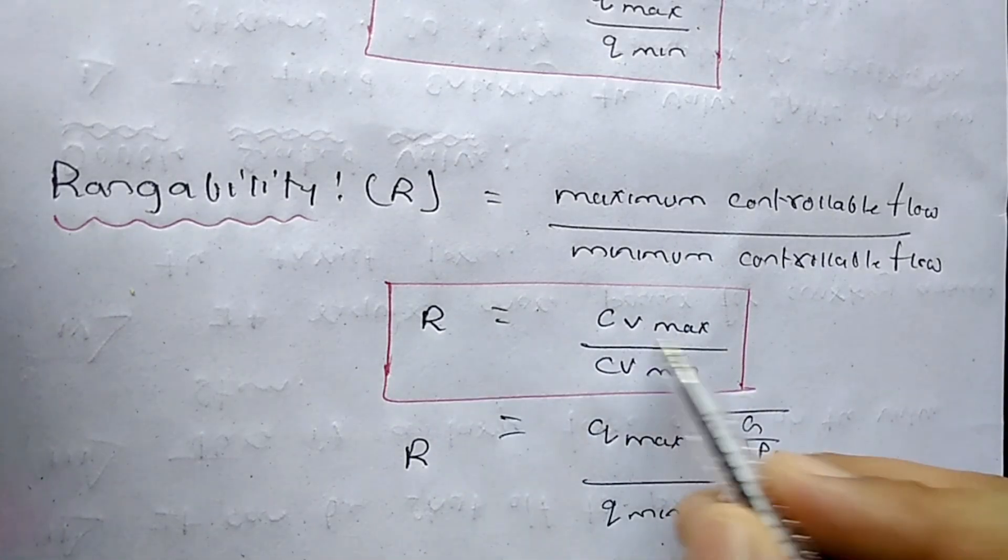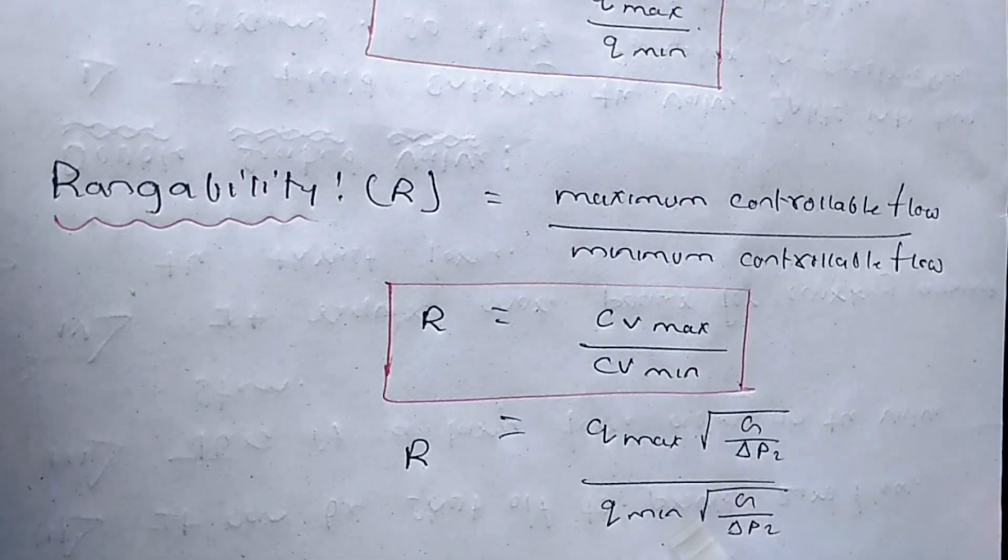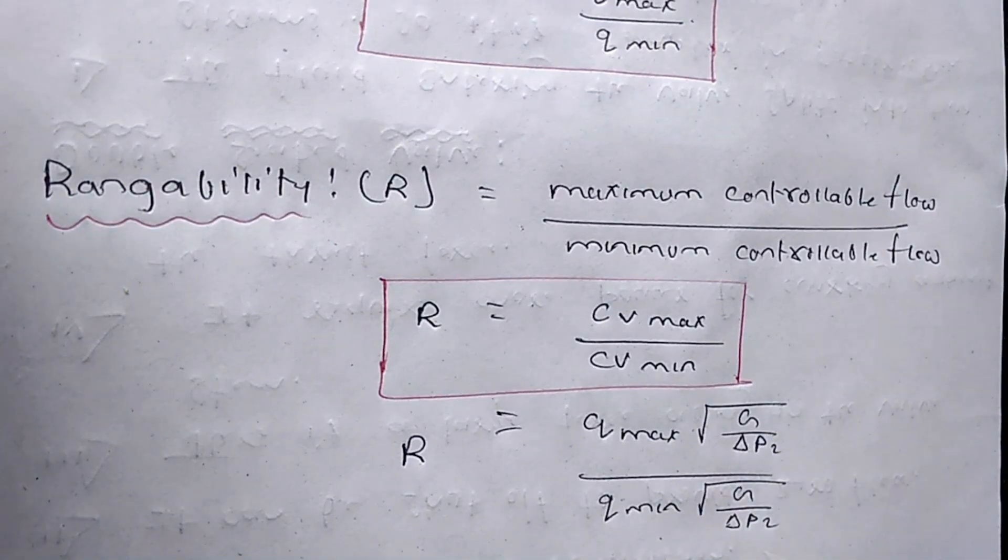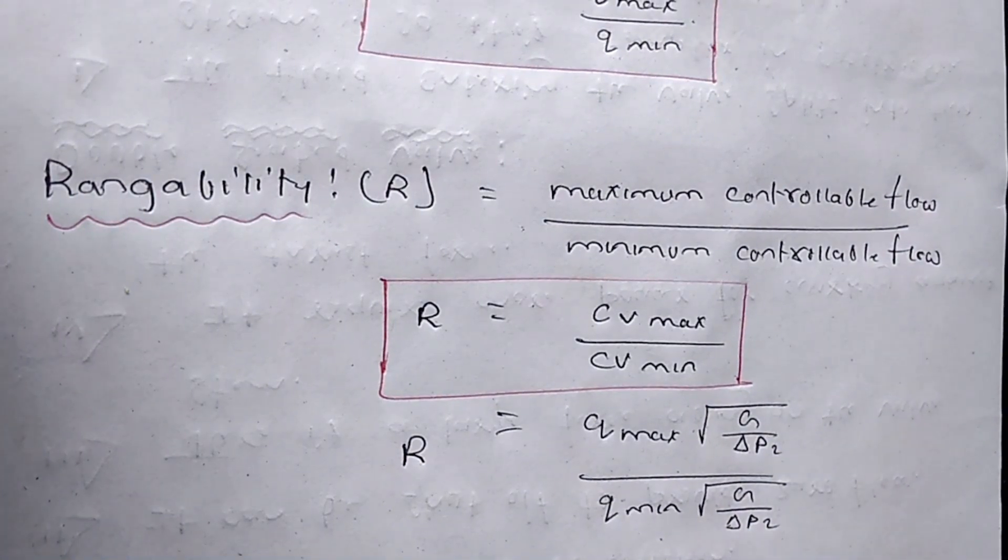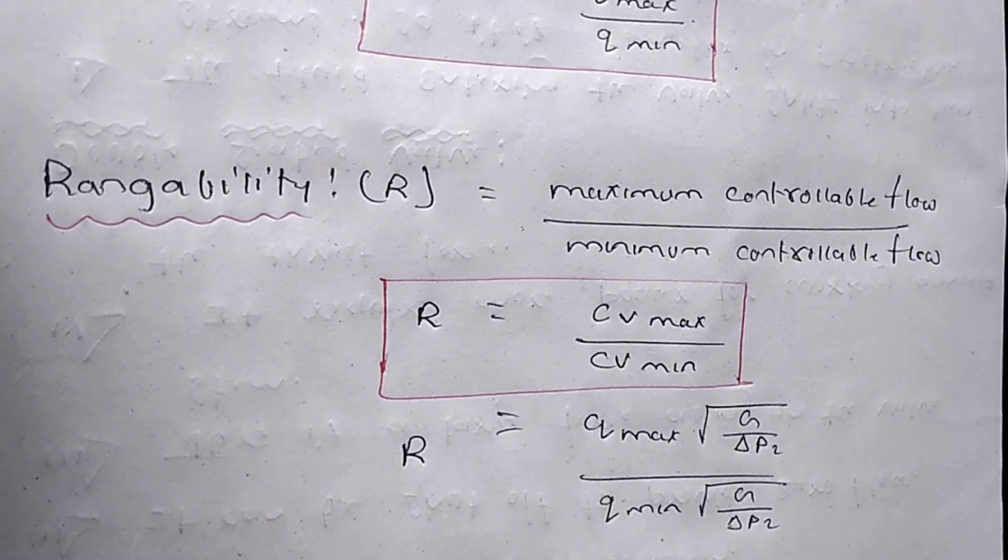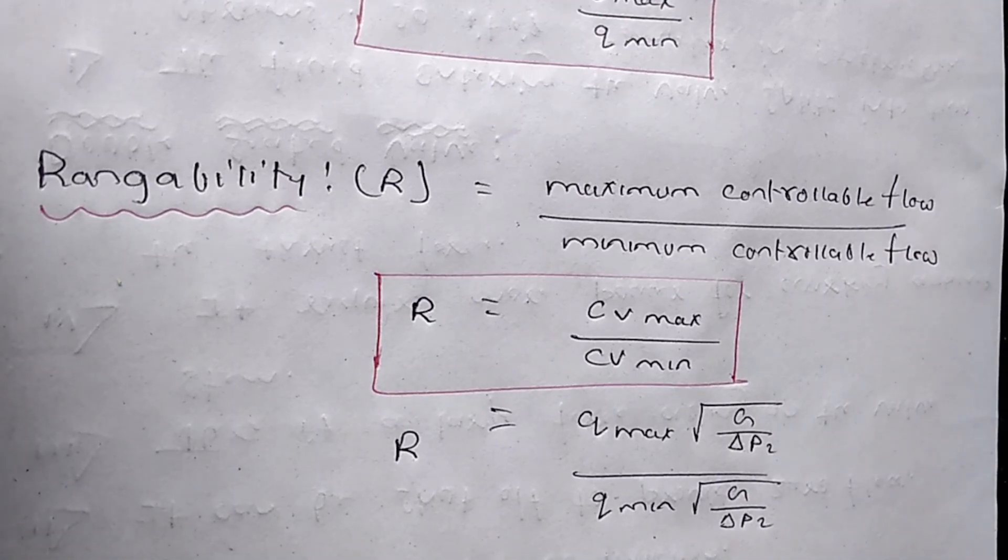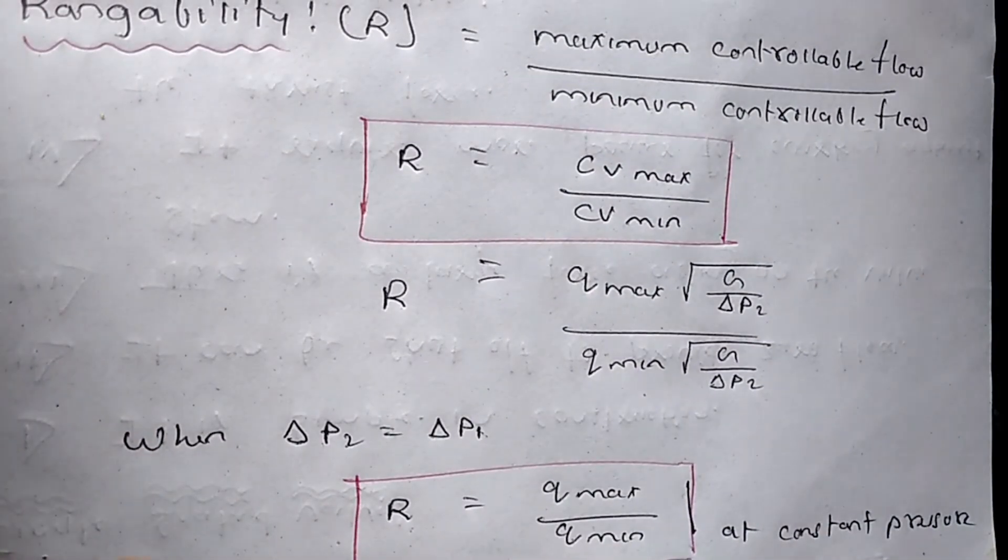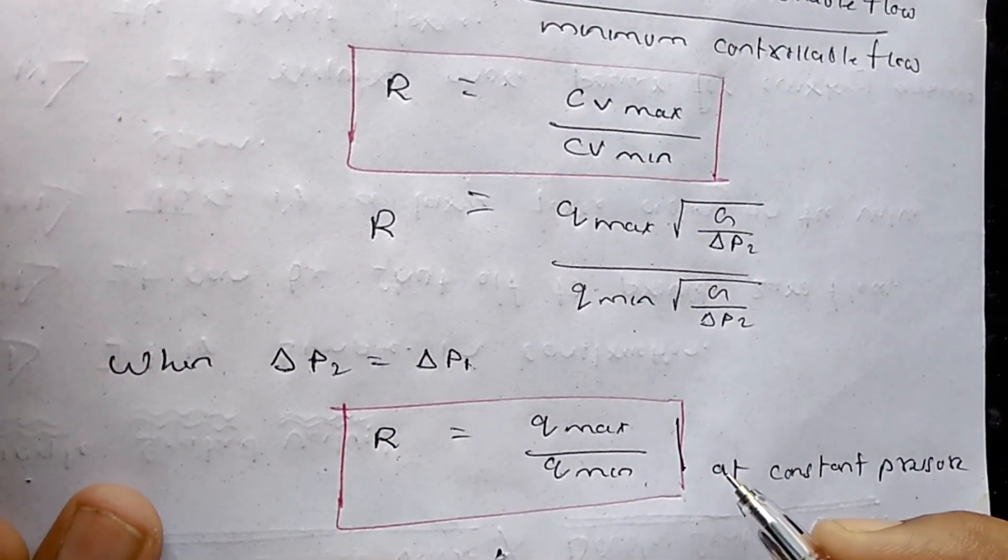So suppose when delta P2 equals delta P1, that means Qmax equals CVmax root over G delta P1 and Qmin equals CVmin root over G delta P2. Suppose when delta P2 equals delta P1, means pressure is constant.